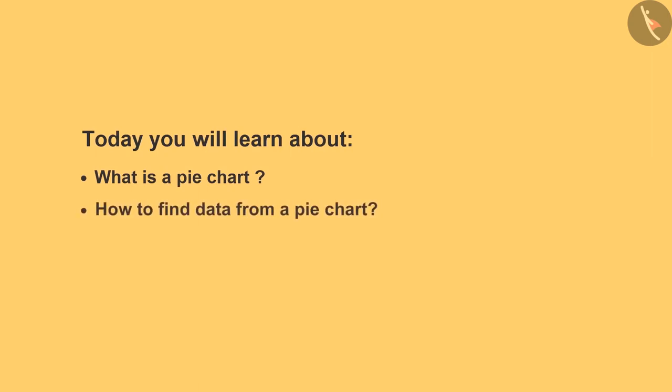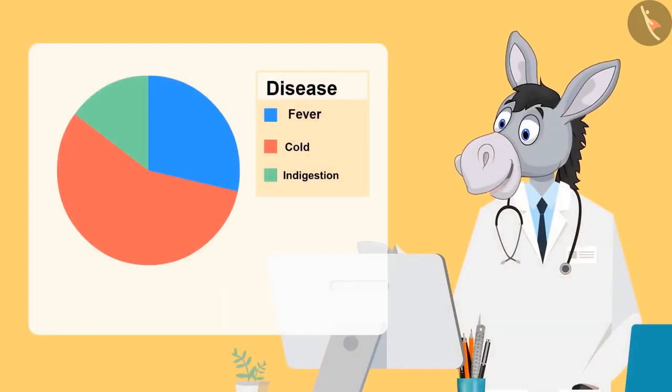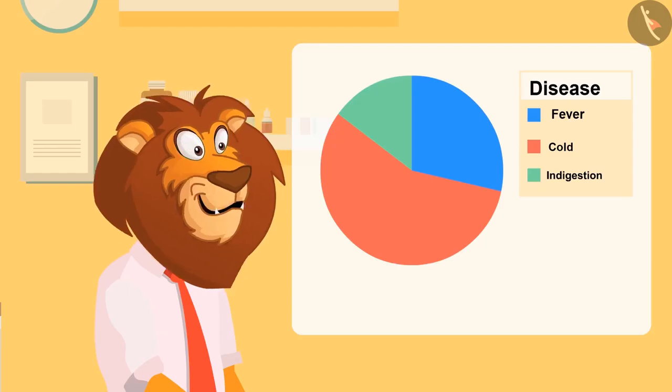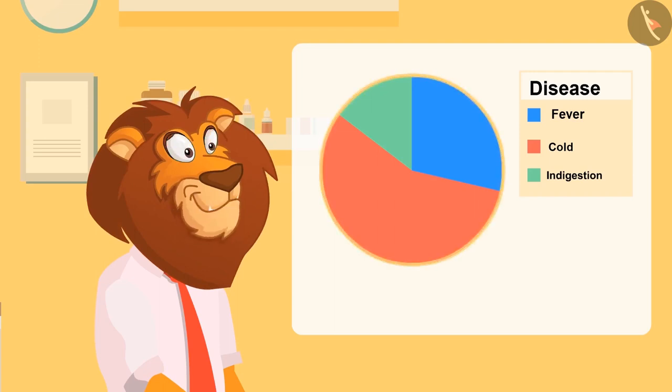So kids, this round shaped chart you are looking at is known as a pie chart. Is it because it is round like a pie? Yes.